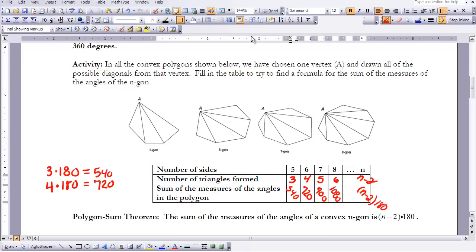I filled in the chart. If you look at the number of sides of the polygon compared to the number of triangles contained when you draw all the diagonals from a vertex, it's always 2 less than the number of sides of the actual polygon. We notice that each time we multiplied the number of triangles formed times 180. So that's where we have n minus 2, and then multiplied by 180. That brings us to the polygon sum theorem: the sum of the measures of the angles of a convex n-gon is (n-2) times 180.